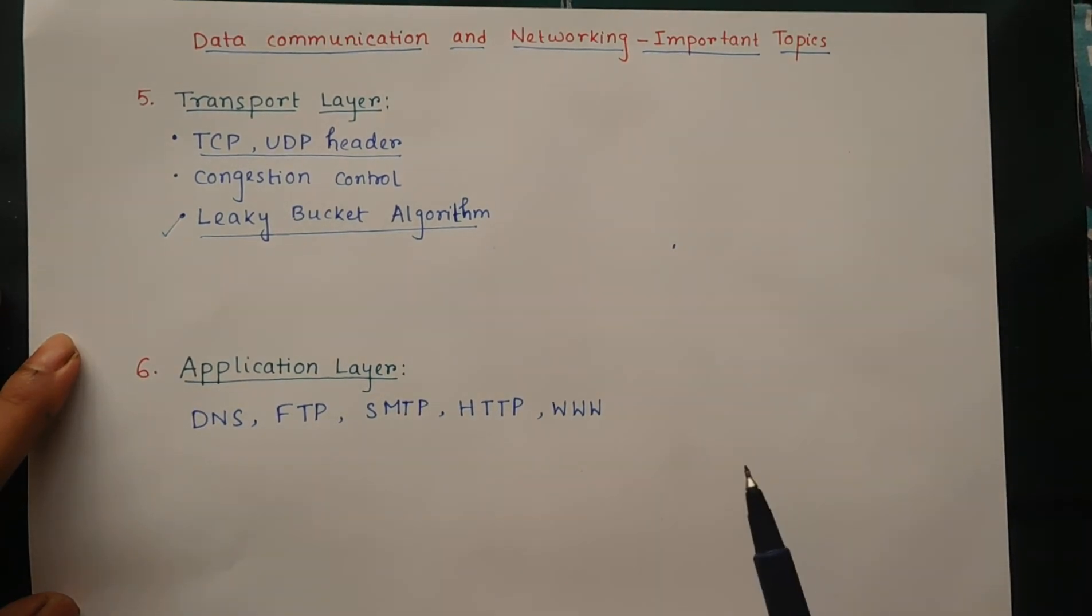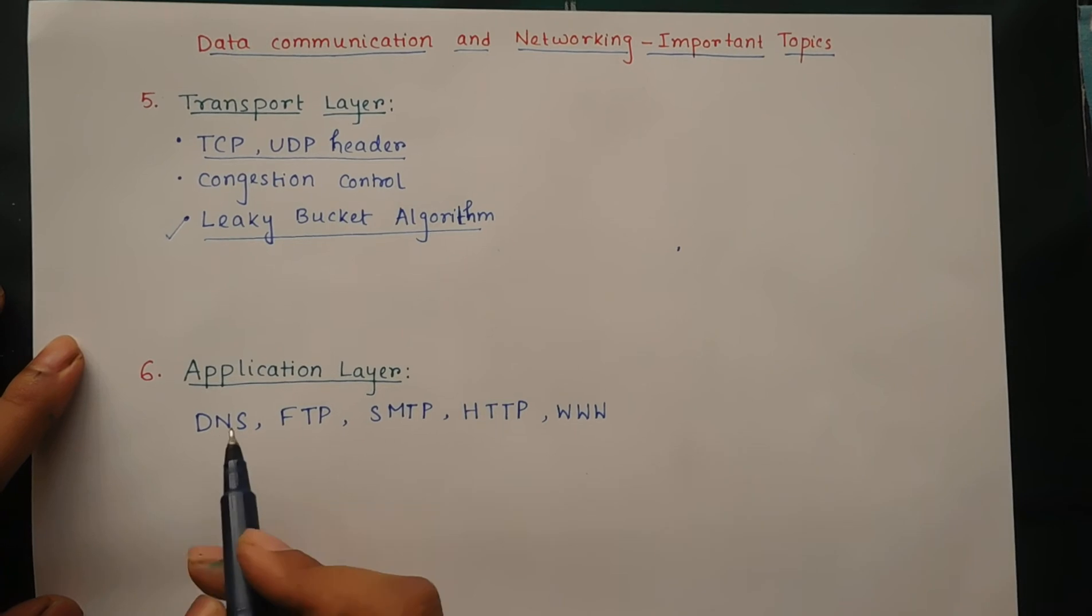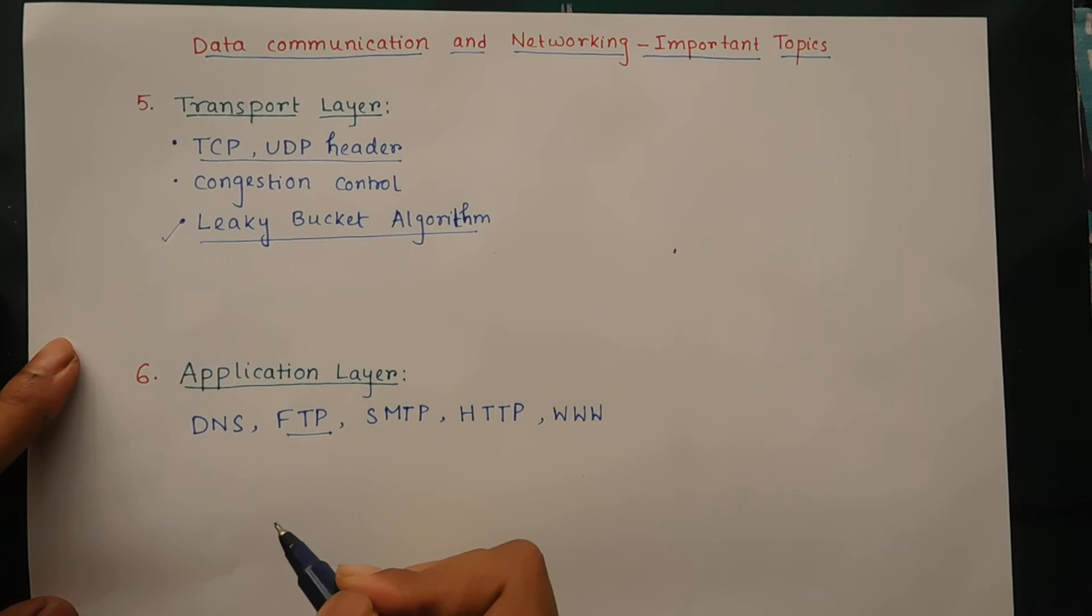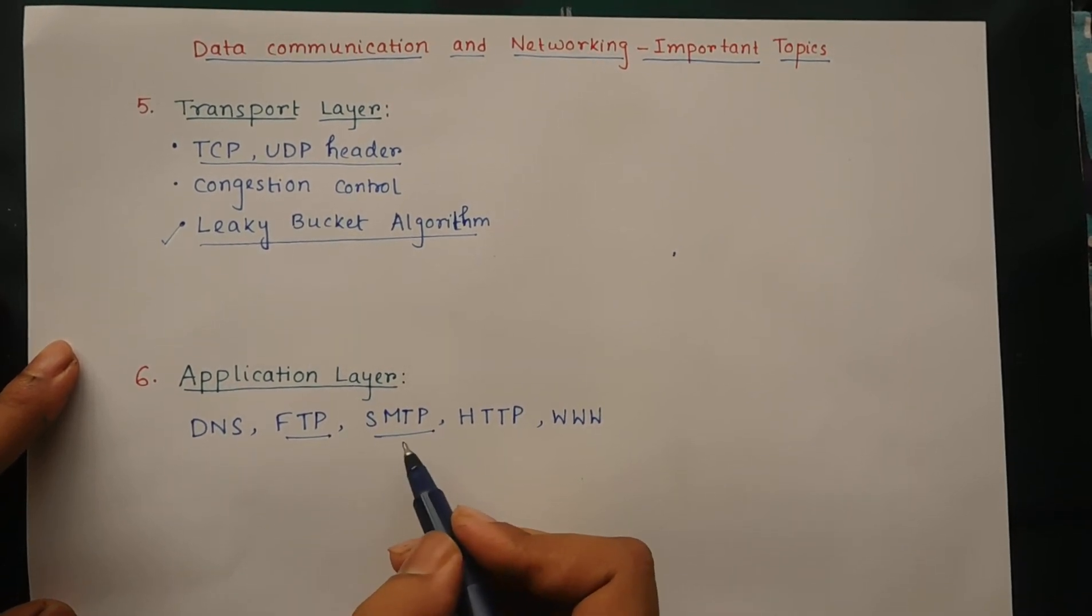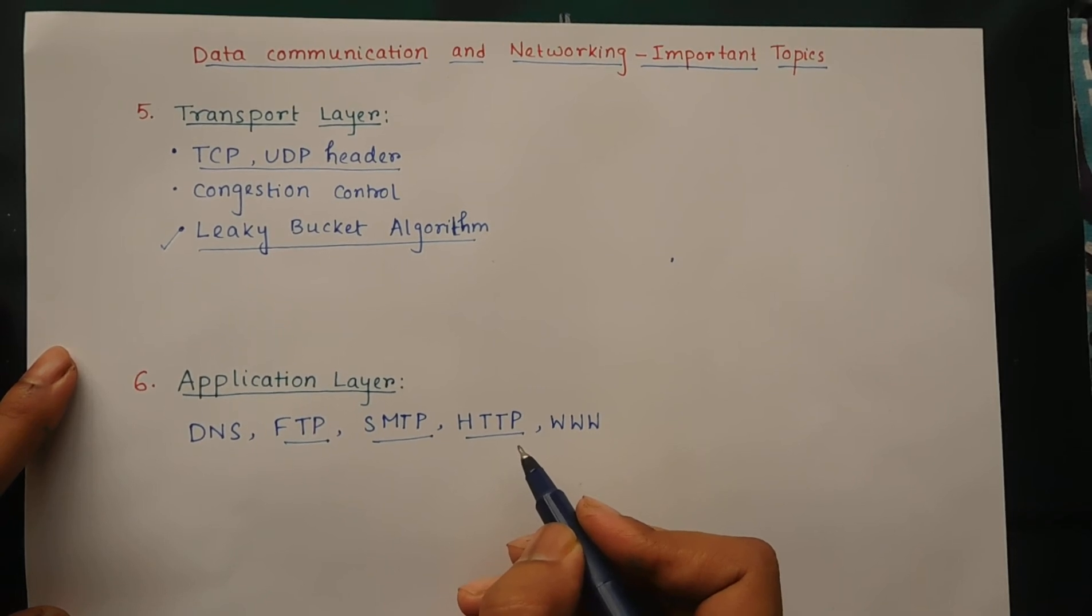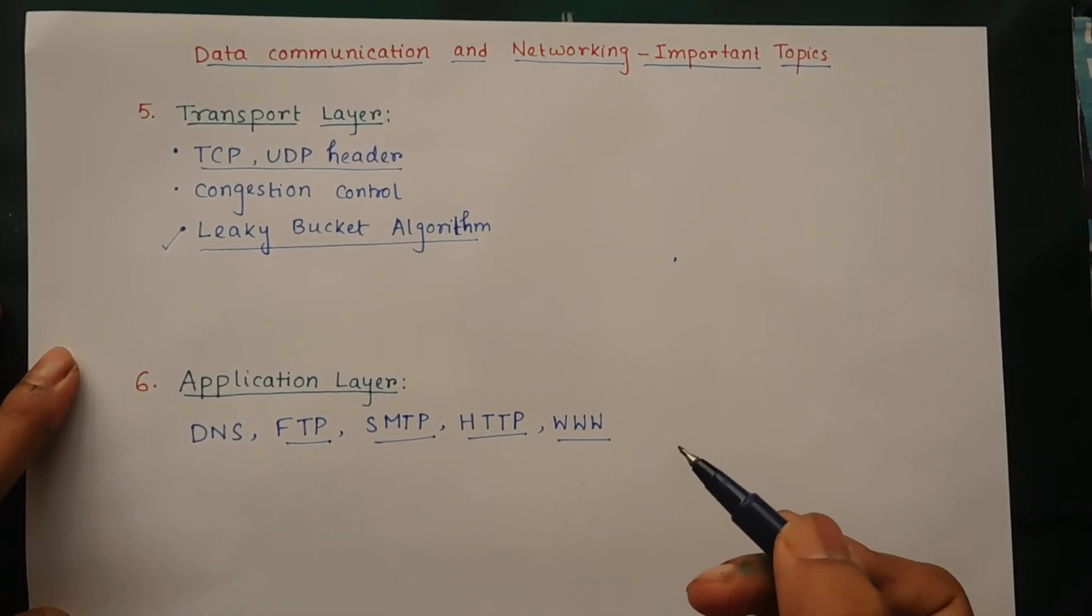The next layer is the application layer. Here you focus on the overview of DNS (domain name system), then FTP (file transfer protocol), then SMTP (simple mail transfer protocol), HTTP (hypertext transfer protocol), and WWW (worldwide web).